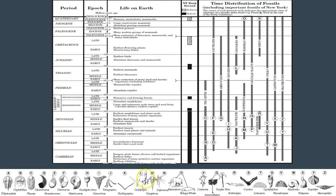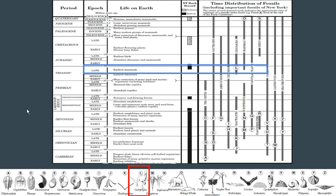Here we have our index fossils. Let's start with an easy one: L. He looks like a dinosaur. If you were asked when did this organism exist, you would say in the late Triassic — that's when this organism existed. Now, the bar graph says dinosaurs existed up until the late Cretaceous. L in particular existed during the late Triassic, but other dinosaurs existed up until the late Cretaceous. The bar graph ends there because of the mass extinction of dinosaurs.